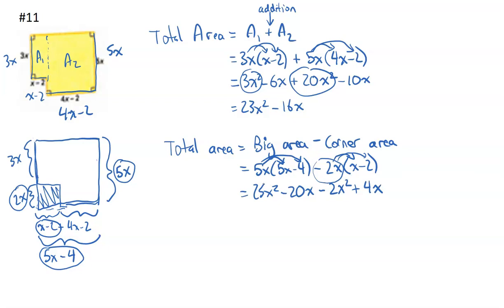The last thing we need to do now is combine the like terms. We get 23x squared minus 16x. And that is exactly the same as we got the other way by adding them together.